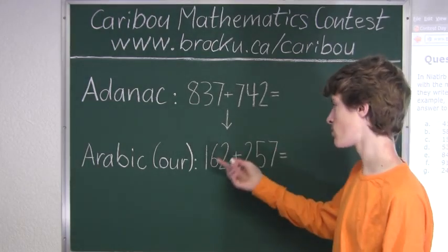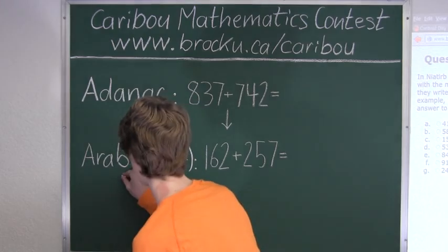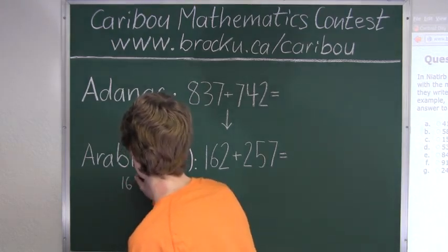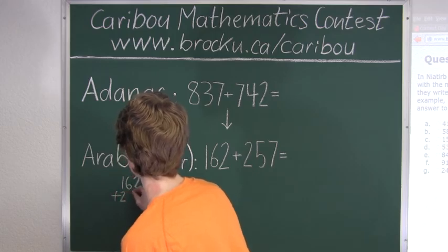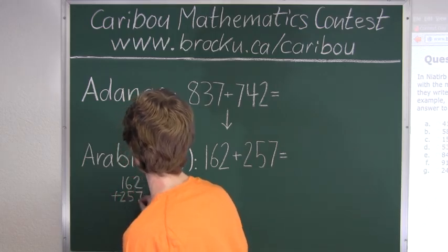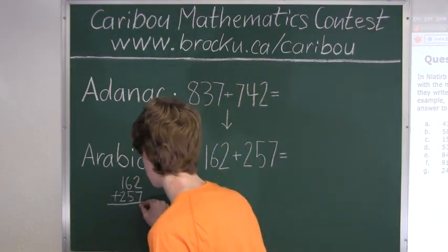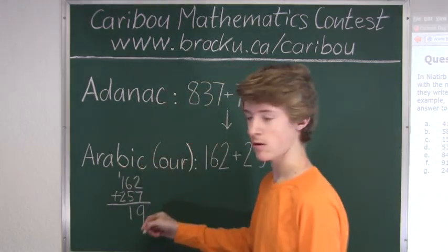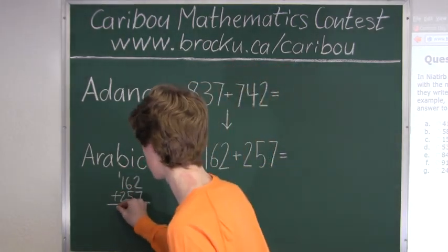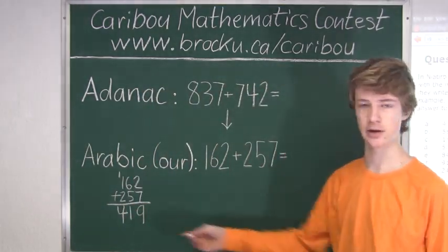So now we will just normally add up 162 plus 257. 9 plus 7 is 9. 6 plus 5 is 11. Carrying the 1 over. 1 plus 2 is 3, plus 1 is 4. So we know that this equals 419.